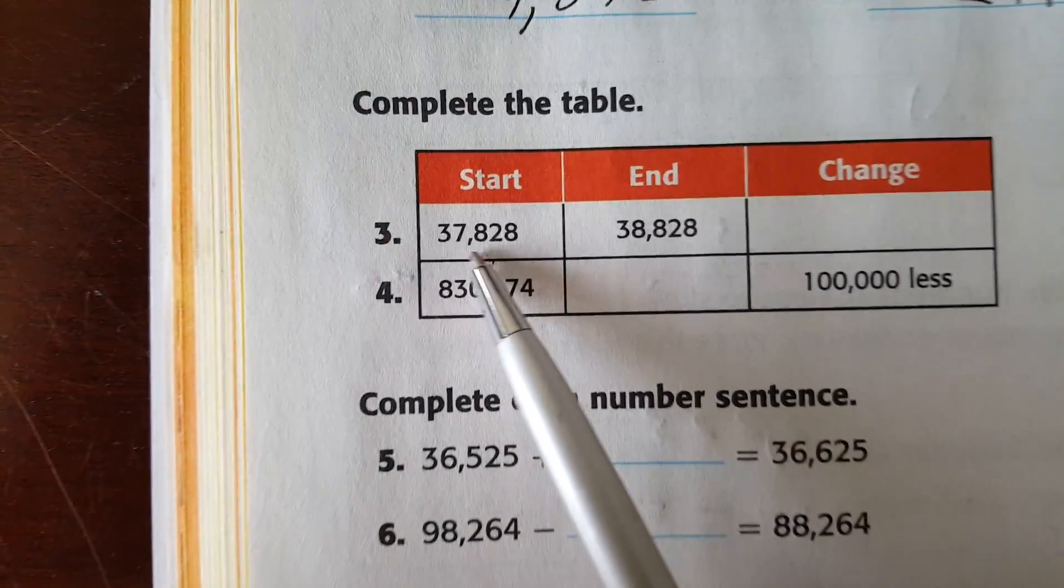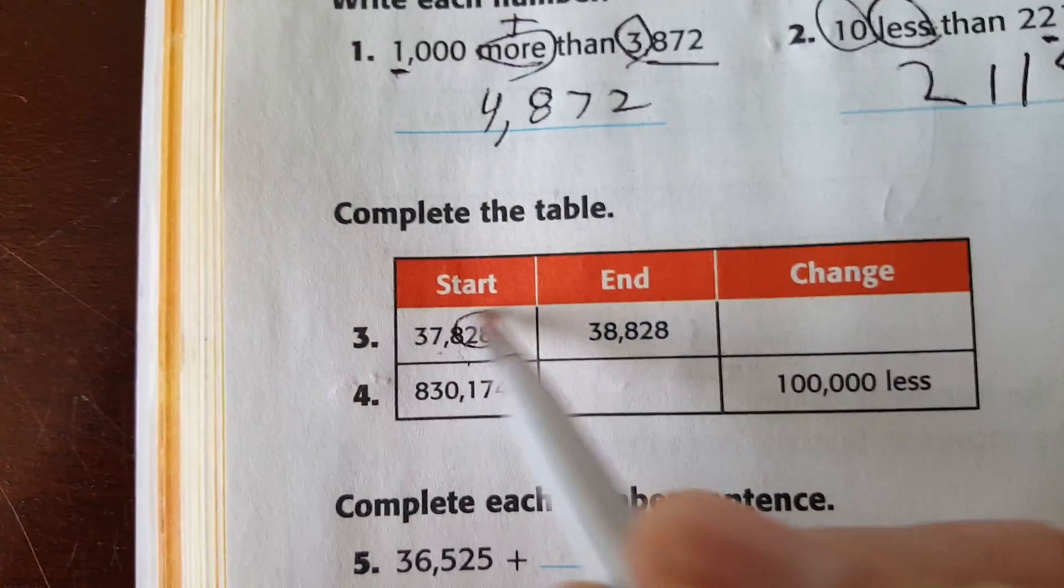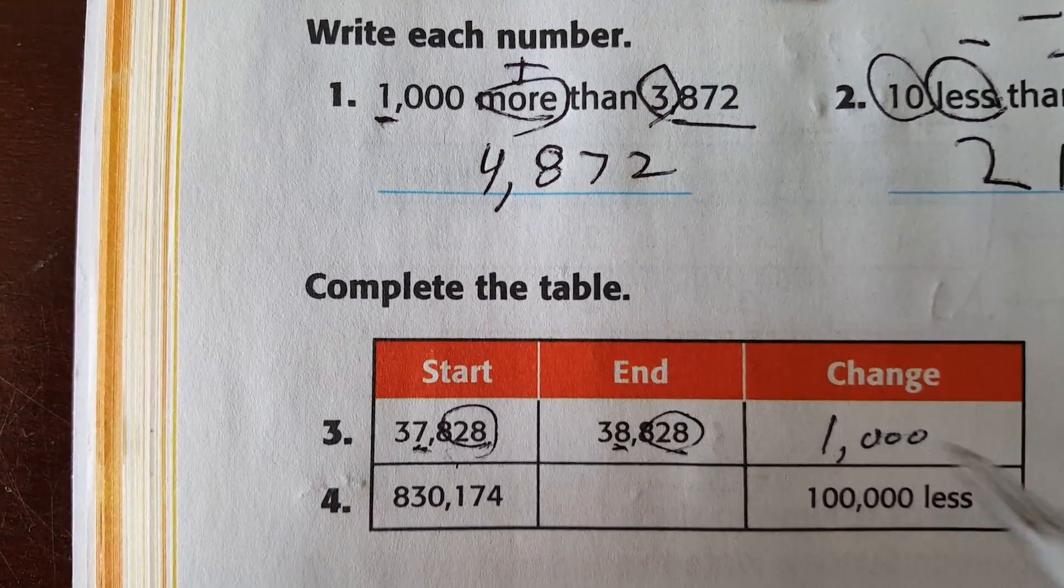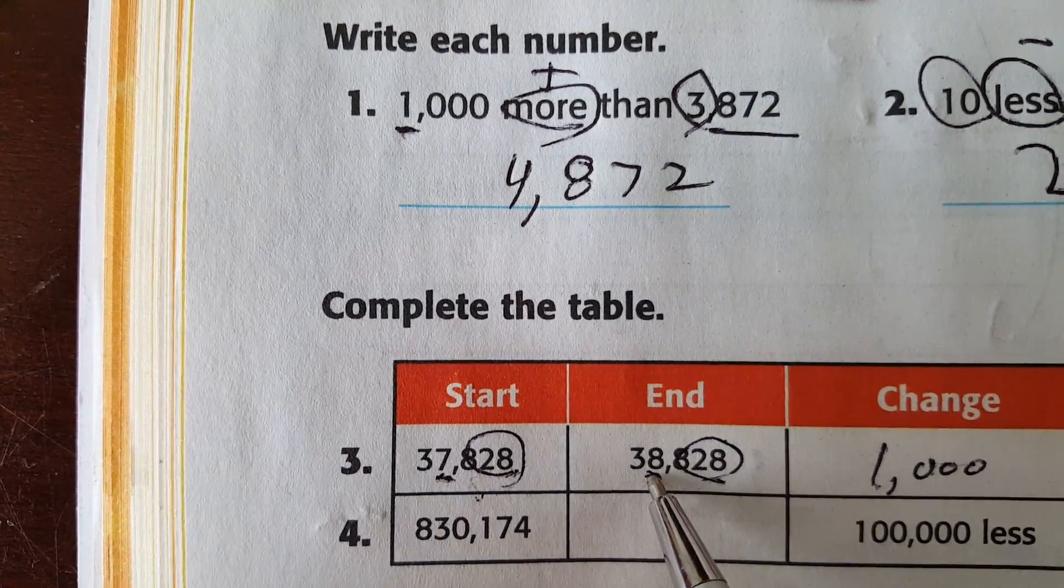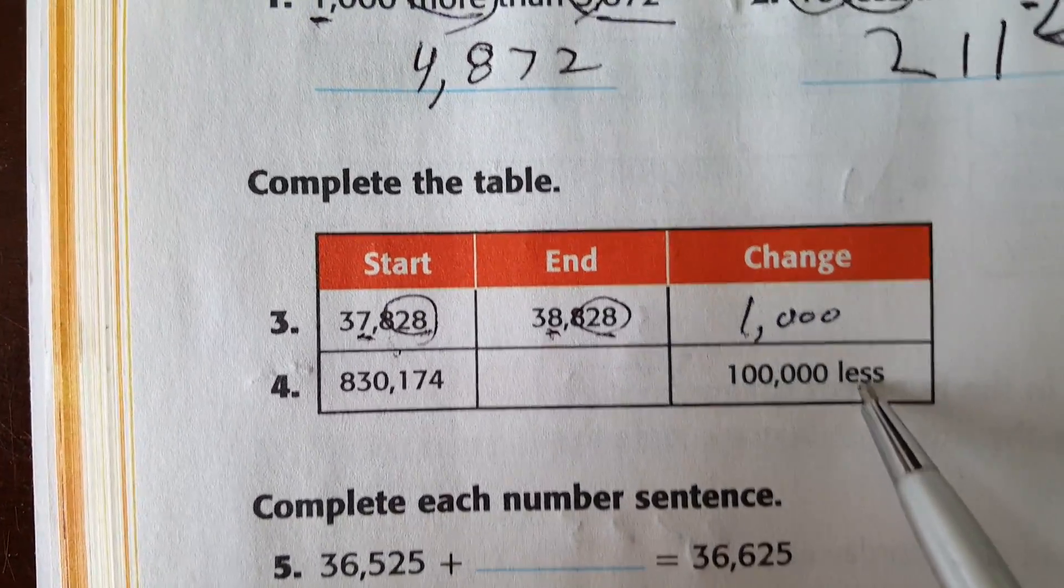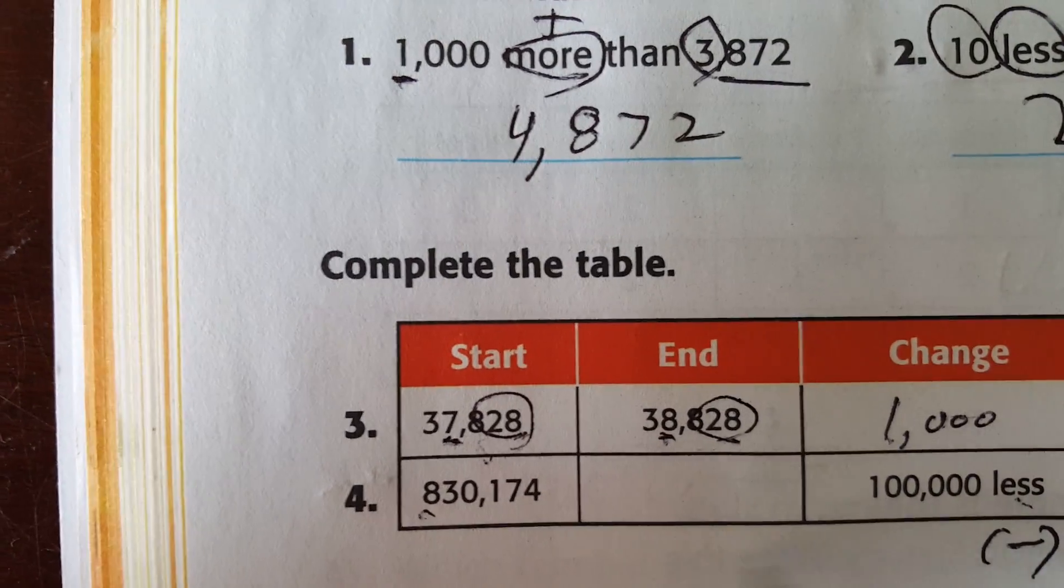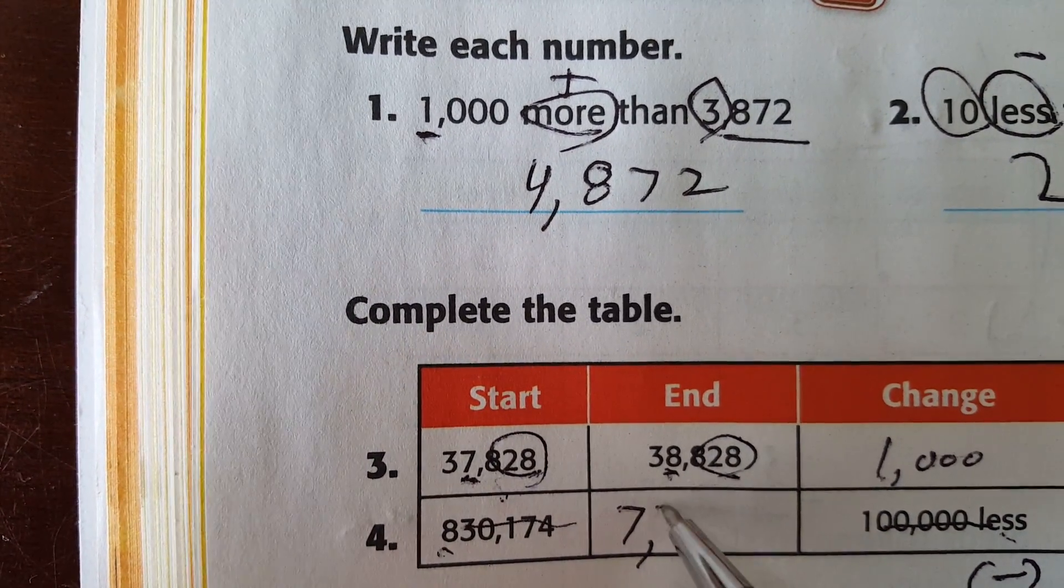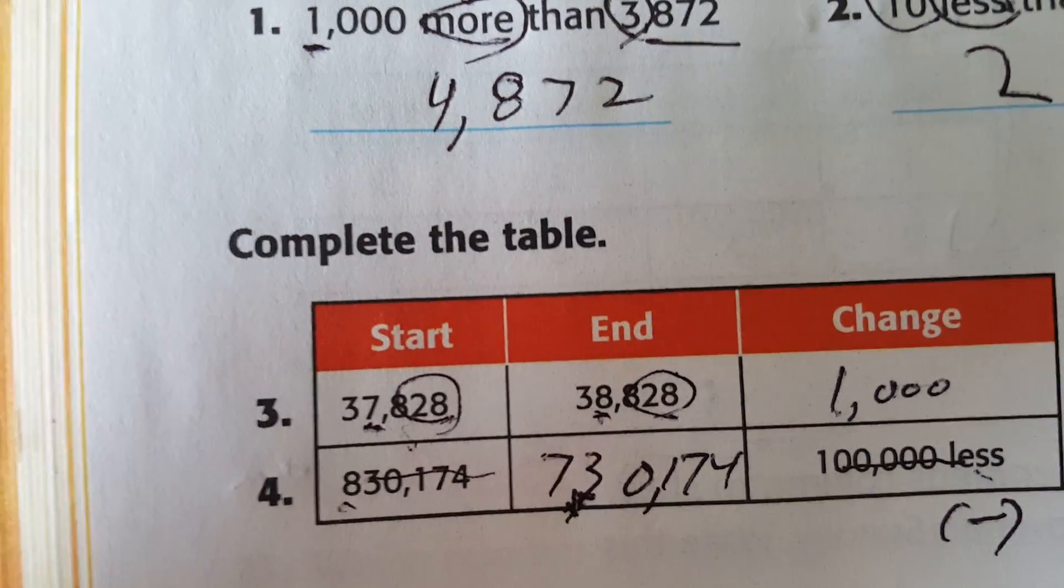Then you have a chart. 37,828 to 38,828. Did these digits change? No. The only digit that changed was in the thousands place. It changed by 1 or 1,000. See how the 7 went to an 8? Down here, 830,174. It says 100,000 less. Less means you subtract. So 100,000 less, you just only look at that digit. None of the other ones matter. Look, all those don't matter. They don't matter. So if it's less, oops. Ignore that little thing down there. 730,174.